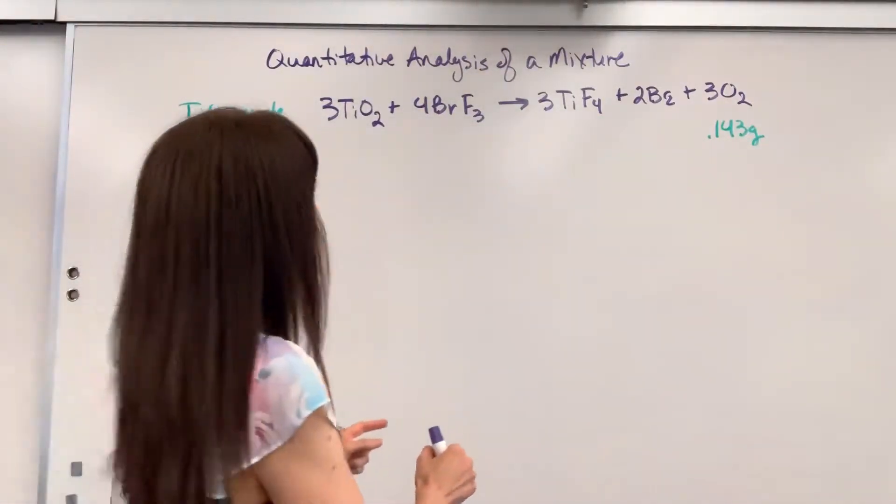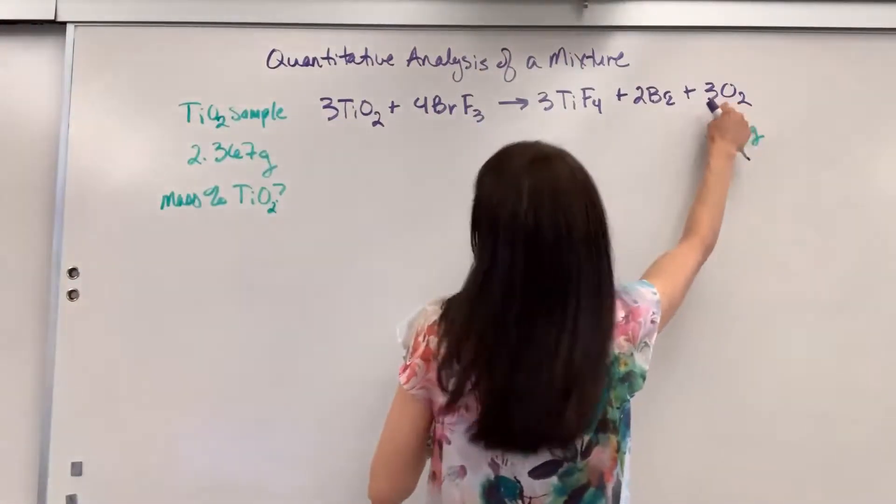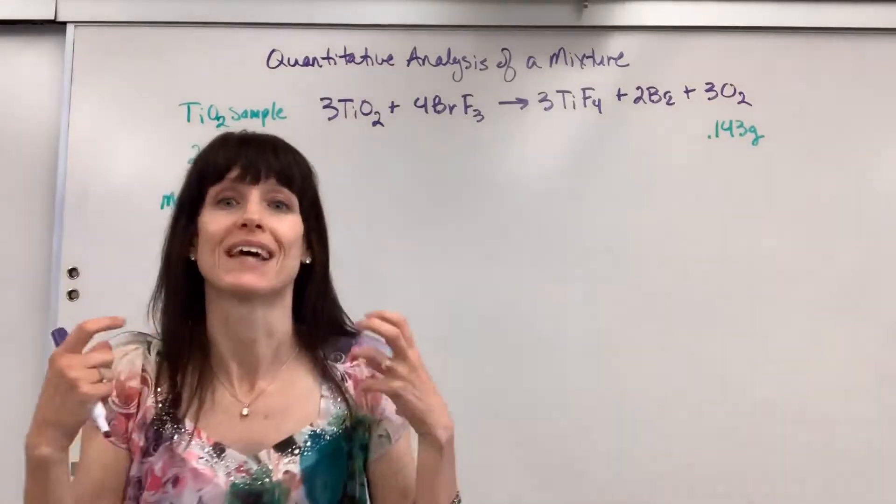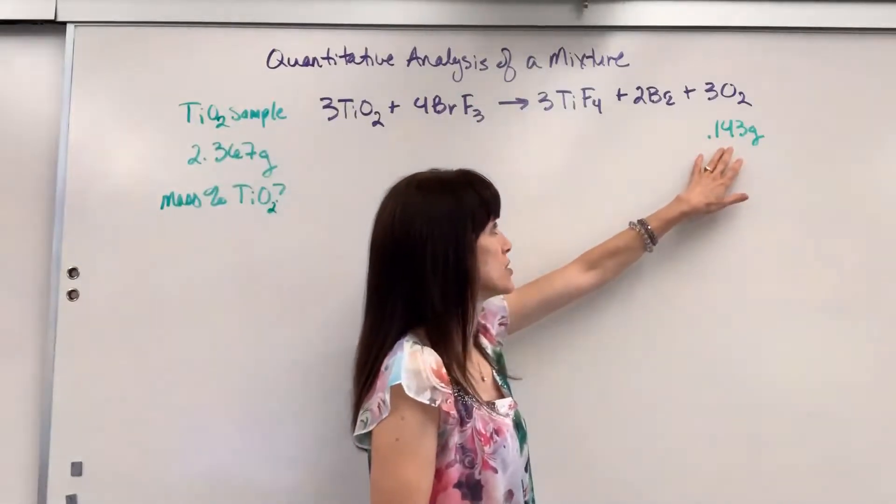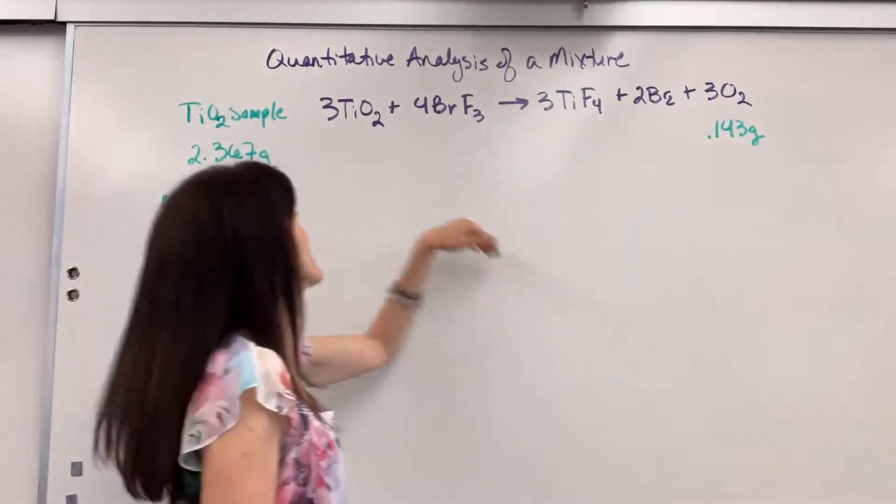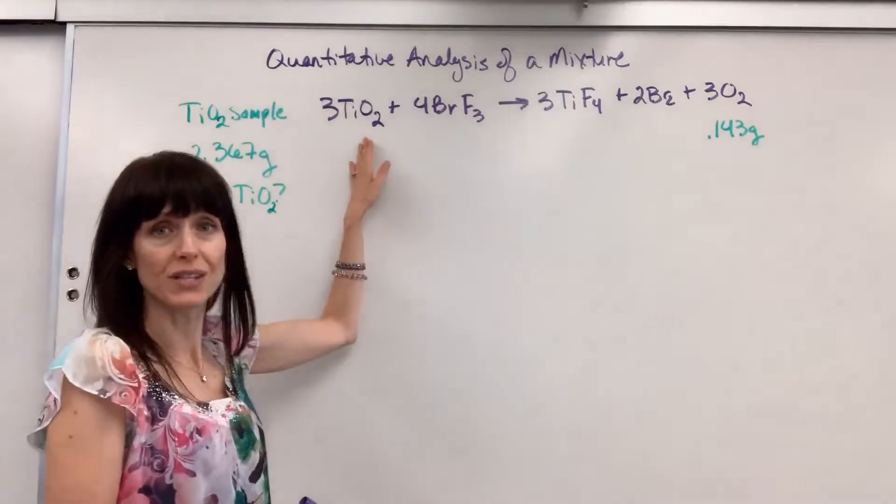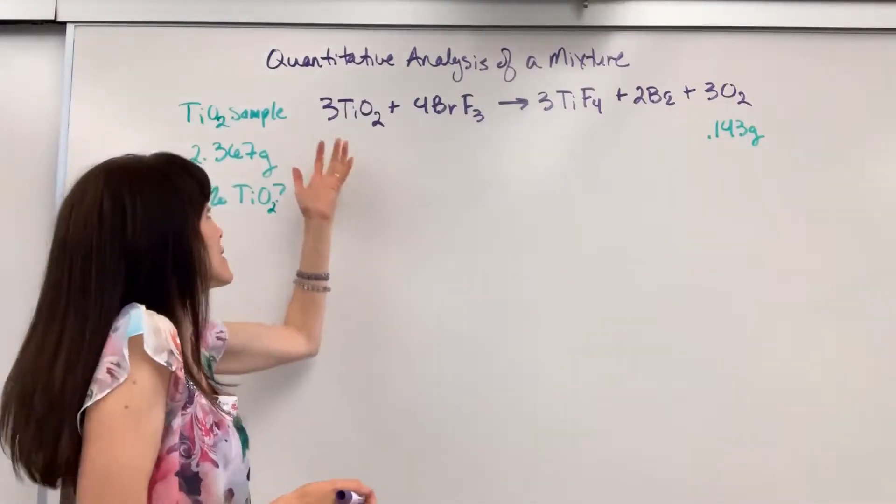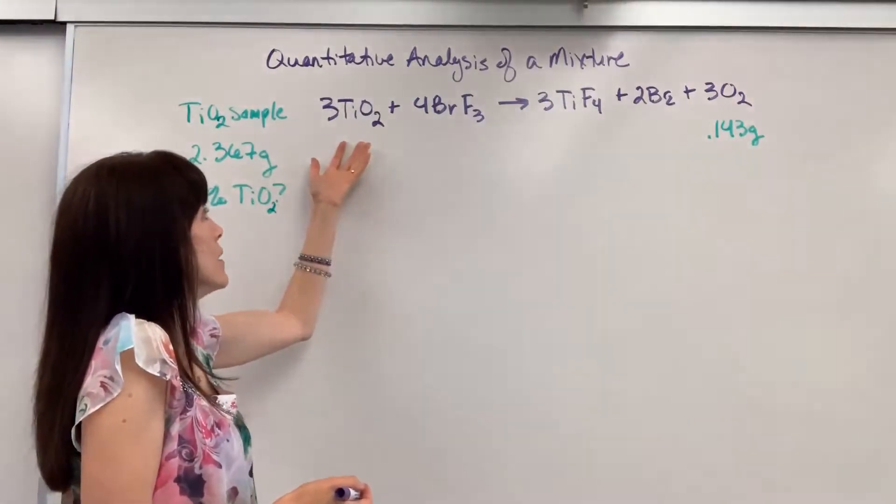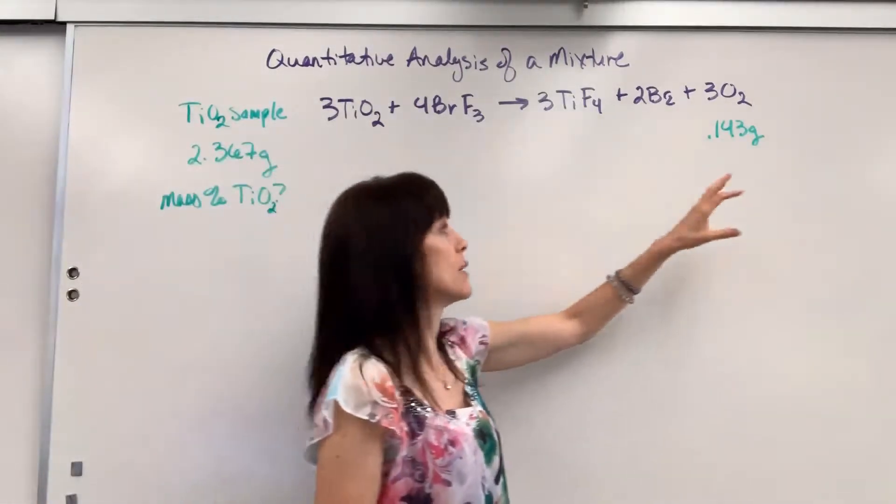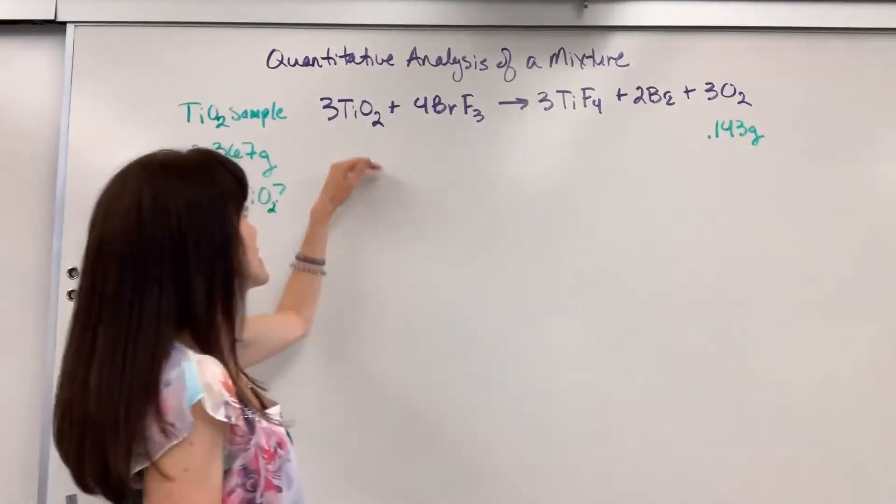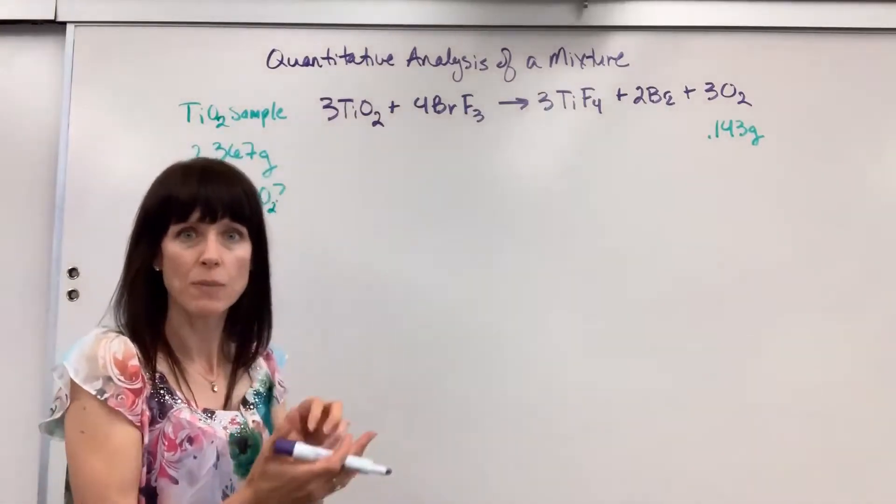Now follow the oxygen. All of that oxygen came from the titanium four oxide. So that means if I know how much oxygen there is here, I know exactly how much oxygen we began with, which means I will know how much titanium four oxide we have. So we're going to do stoichiometry from oxygen back to that titanium four to see how much was in the sample.